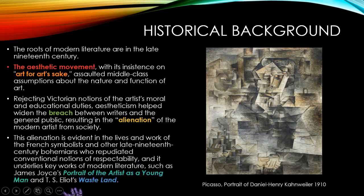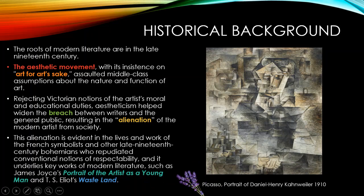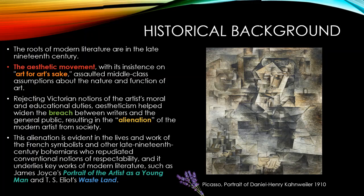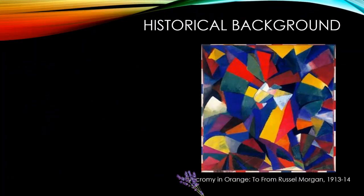Key works of modern literature such as James Joyce's 'Portrait of the Artist as a Young Man,' T.S. Eliot's 'The Wasteland,' and James Joyce's 'Ulysses' were all published in 1922, and they are the platforms for 20th century modernist literature in the English-speaking world.